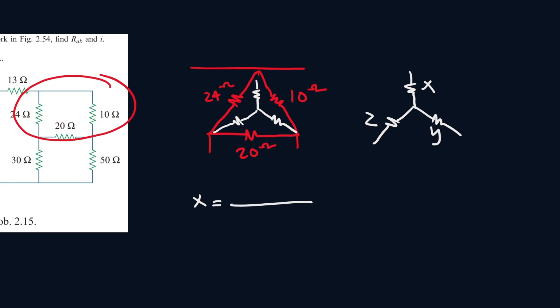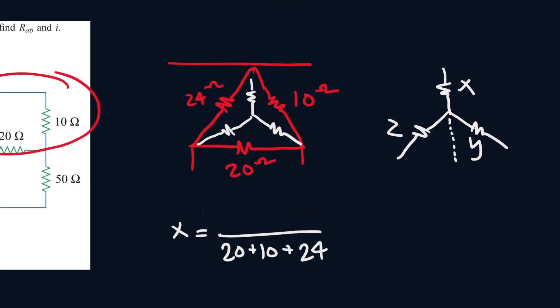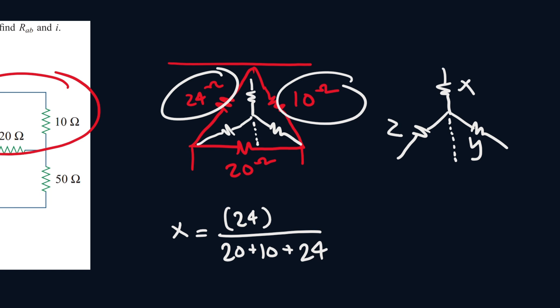The formula will look like this. In the denominator it will be all of these values combined — so it'll be 20 plus 10 plus 24. The top is the tricky part. If we draw a line going downwards aligned to the X resistor, we see it hits the 20-ohm resistor, so we can't use it in the numerator. That means we just use the other two: 24 times 10. That gives us X equals 4.444 ohms.